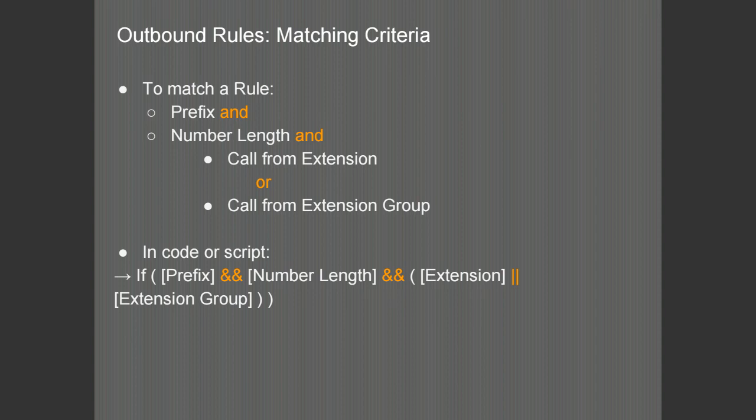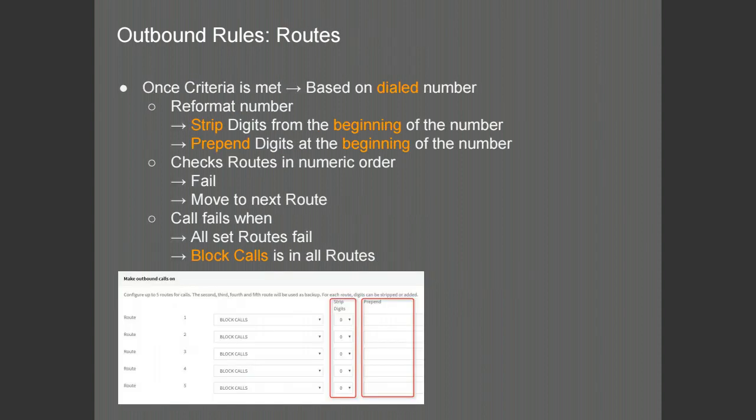In order for a call to be processed, the rule will need to match the criteria. The match will be the prefix and the number length and either an extension number or extension group, scripted in the format shown on the slide. In an outbound rule, once the criteria have been met, the PBX will then proceed to process the call. The rule is matched based on the dialed number.